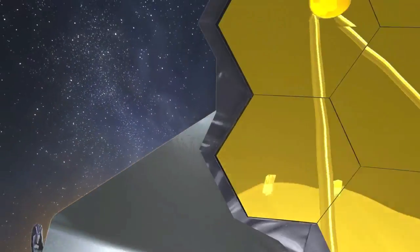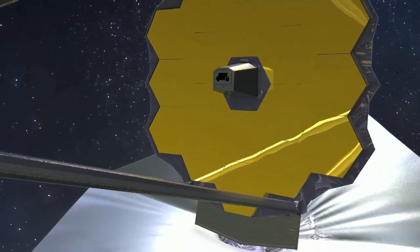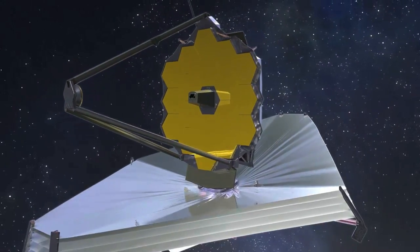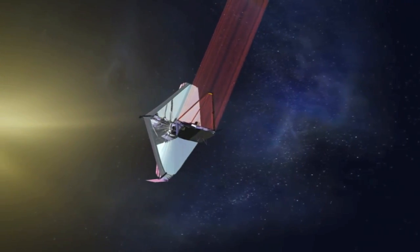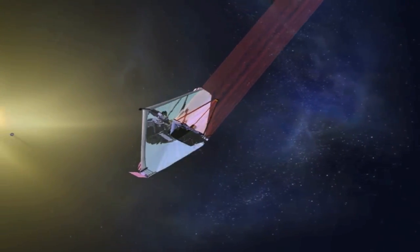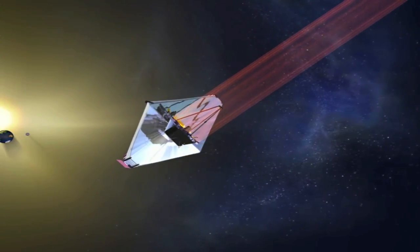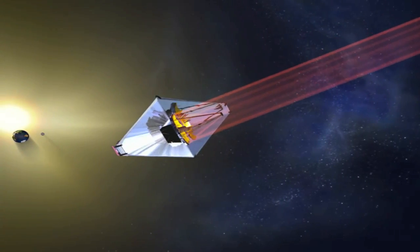The James Webb Space Telescope is designed precisely to do this. Using 18 on-board detectors, most sensitive to the infrared, over a half a terabyte of images per detector per week will be transmitted to Earth, with many surveys planned for the first stars and galaxies.